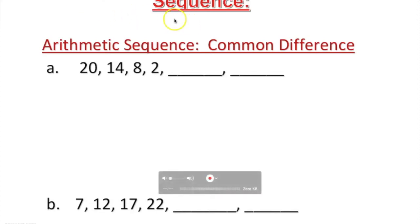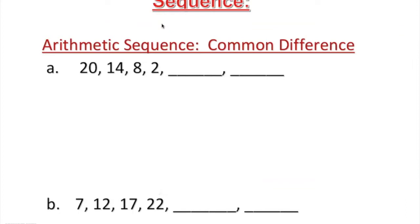Let's talk about sequences. A sequence is basically a list of numbers having a first, second, third, fourth term, and so on — like an odd sequence or even sequence. For example, one, three, five, seven and so on is called a sequence. This is a1 the first term, a2 the second term, a3 the third term, a4 the fourth term, and of course a sub n somewhere along the line.